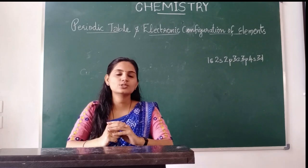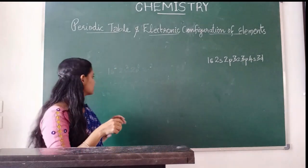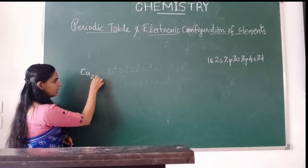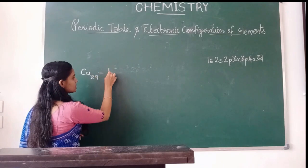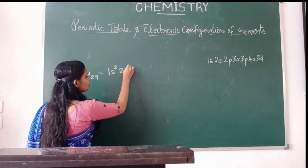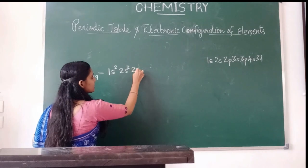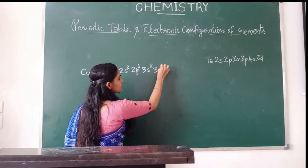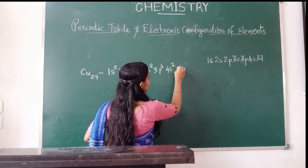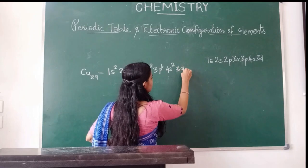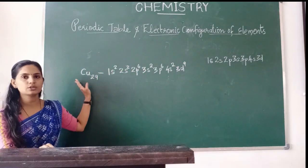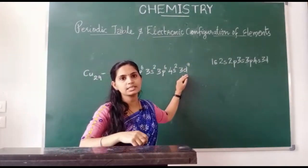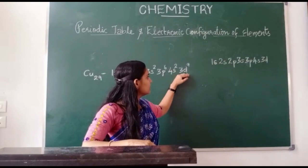Next, the electronic configuration of copper. Copper, symbol Cu, has atomic number 29. The expected electronic configuration is: 1s2, 2s2, 2p6, 3s2, 3p6, 4s2, 3d9. We know that completely filled or half-filled configuration is more stable, so 3d10 is stable.